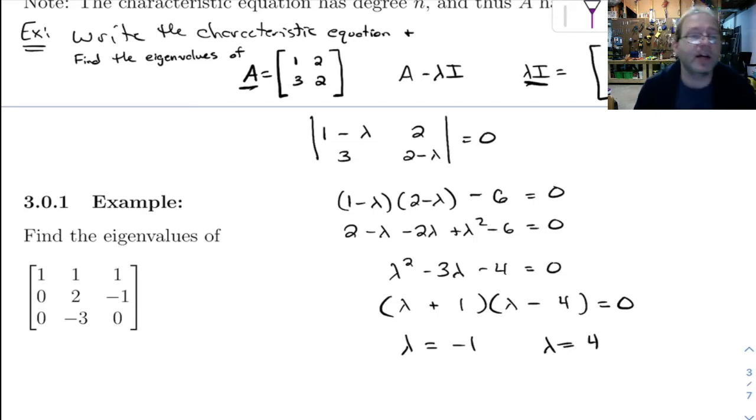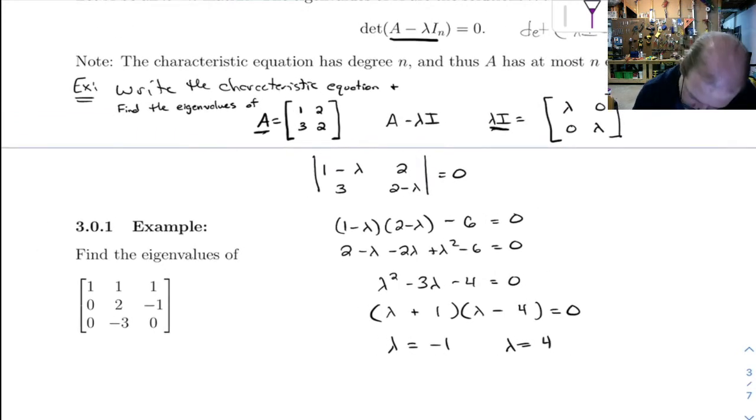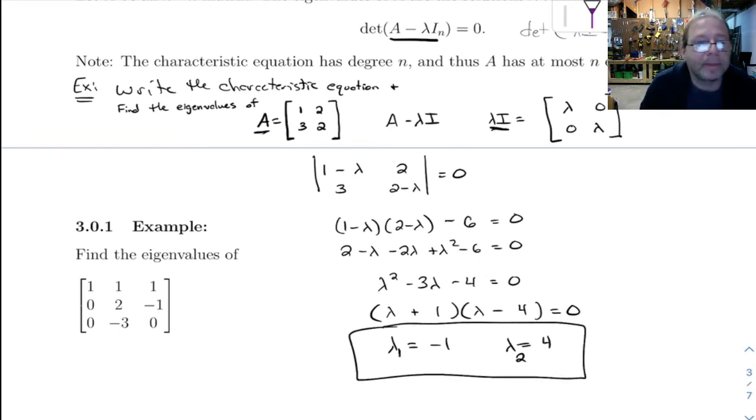So those are our two eigenvalues for this matrix. It's fairly common when you have multiple eigenvalues to label them with a subscript. So lambda 1 is this and lambda 2 is that.